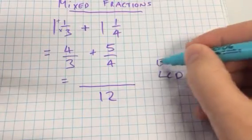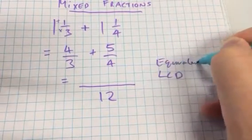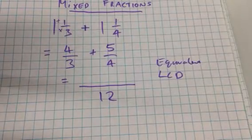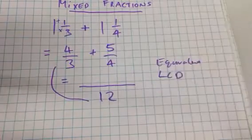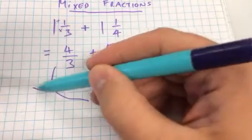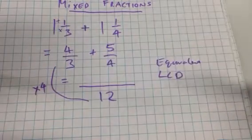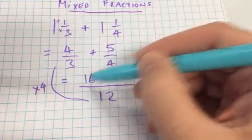So what's the equivalent fraction over twelve of four thirds? What do I do to that three to get it to twelve? Times it by four. Times it by four, so what do I do to the numerator? Times it by four. And four times four is? Sixteen.